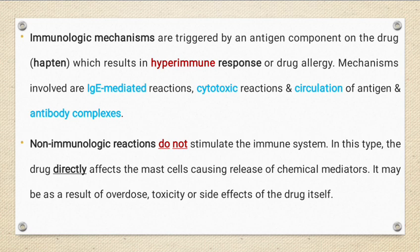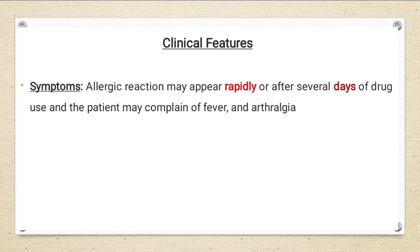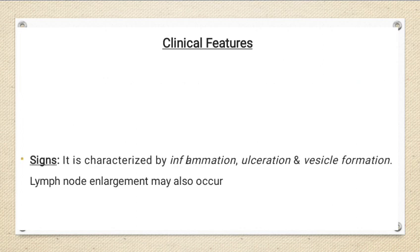Regarding the non-immunologic reaction, the drug itself does not stimulate the immune system but directly affects the mast cells, which then release chemical mediators such as inflammatory cytokines, resulting in ulcers from mucosal damage. This can result from overdose, toxicity, or side effects of the drug. Clinically, after taking the drug — immediately or after several days — the patient starts complaining of fever, fatigue, arthralgia, inflammation, ulcers, vesicle formation, and lymph node enlargement.